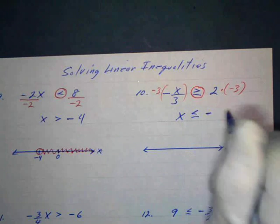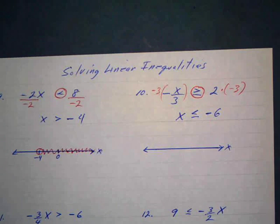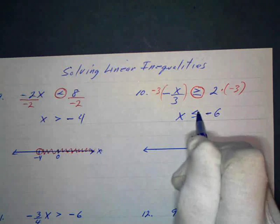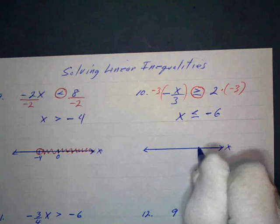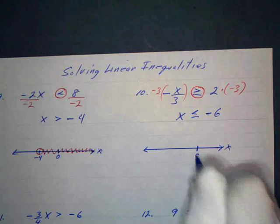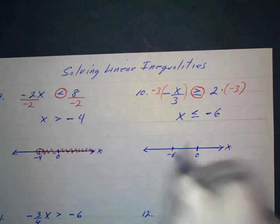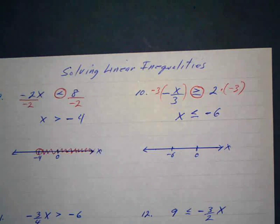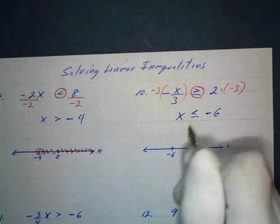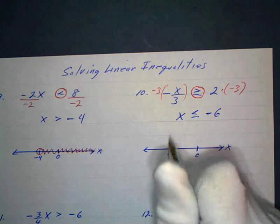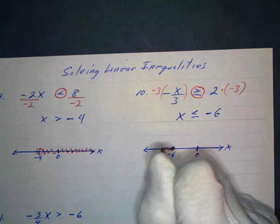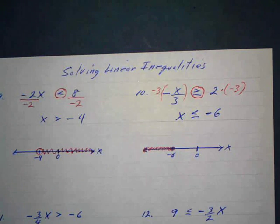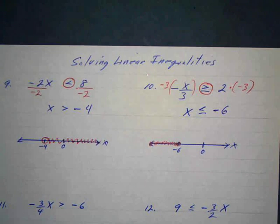A negative times a positive is a negative, and 2 times 3 is 6, so that's going to be negative 6. I put 0 on the number line — I know negative 6 is to the left of 0. I'll give myself a little more room, put negative 6 over here, then put a solid dot and shade everything to the left of negative 6, all the way to the end of the number line.